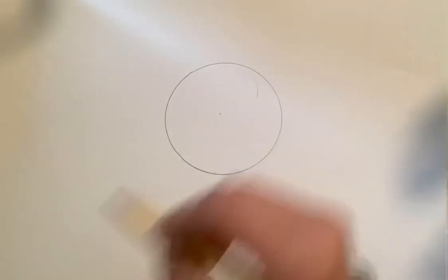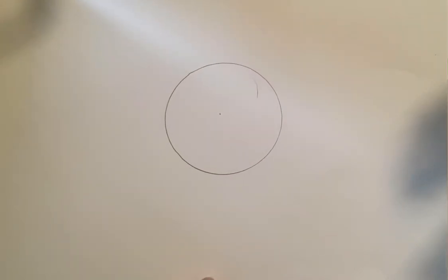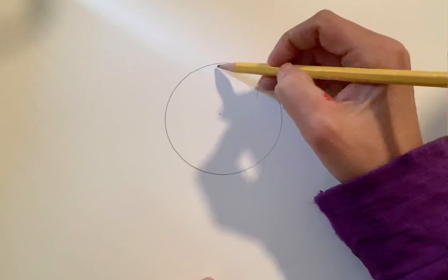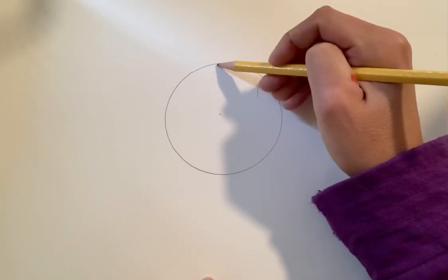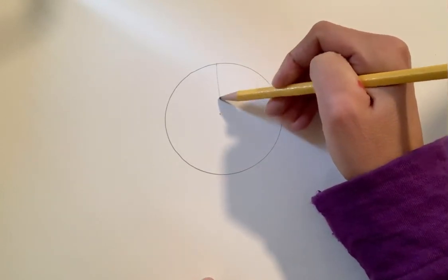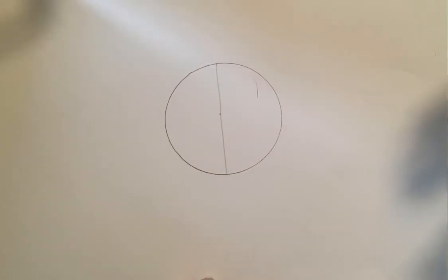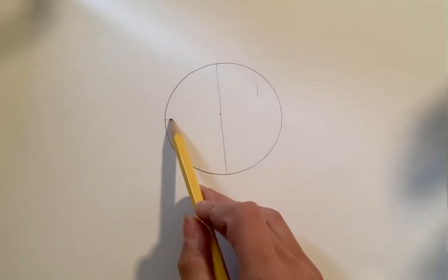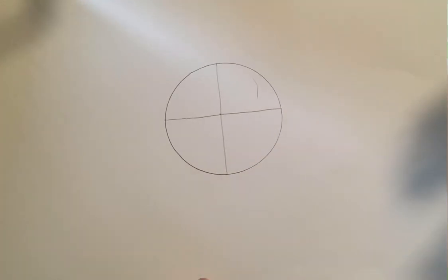In the middle of our circle we're going to make a little dot to help us figure out where the center is, and we're going to divide our circle in half. You don't need to make this perfect. If you have a ruler you can use that but you don't have to. I'm going to divide it in half one way and then across the other way, kind of like dividing a pizza into four big slices.